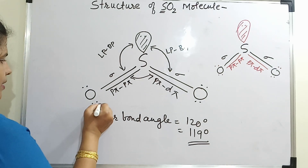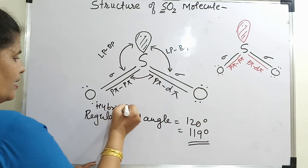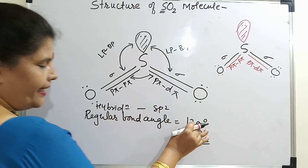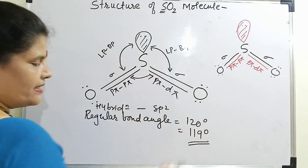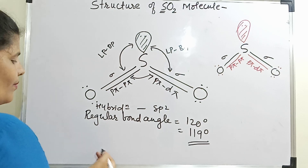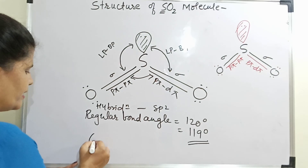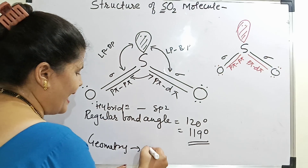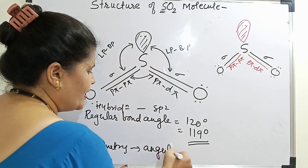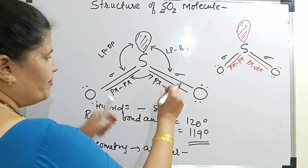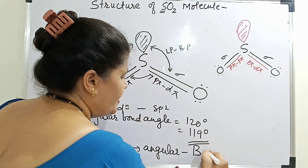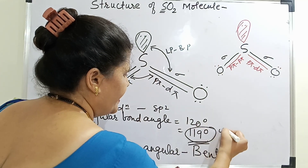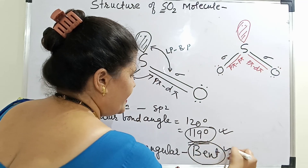Hybridization here is SP2. The regular bond angle is 120°, but in the molecule it is now 119°. Very importantly, what is the geometry? The geometry expected is angular, but the molecule is getting bent. So the geometry which is seen here is bent.